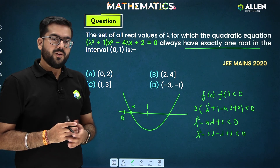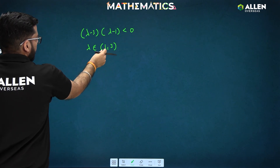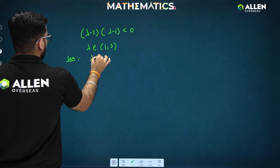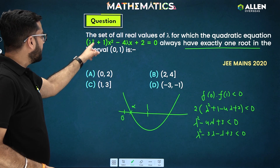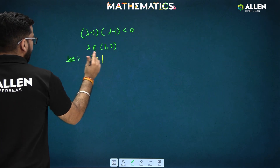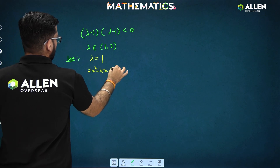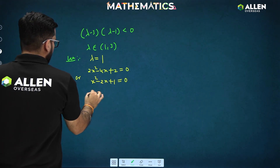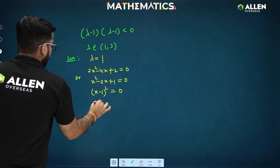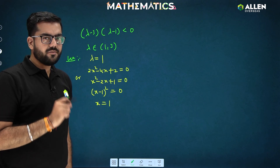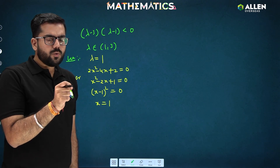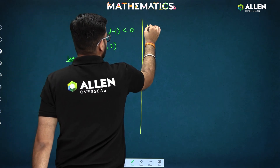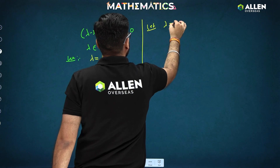When λ = 1: the equation becomes 2x² − 4x + 2 = 0, or equivalently x² − 2x + 1 = 0, which gives (x − 1)² = 0, so x = 1. The only root is x = 1, which is the endpoint, not strictly inside (0, 1). Therefore λ = 1 is not included in the answer.